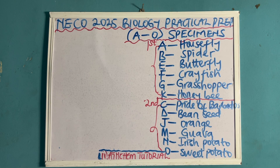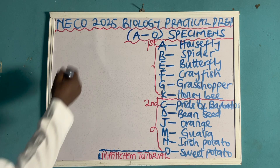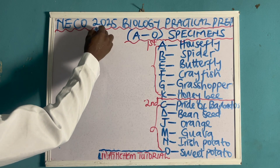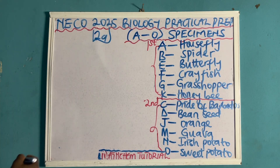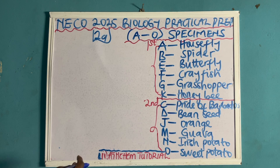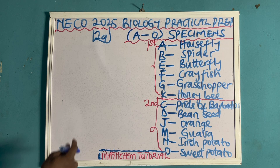The first question they can ask in this second category — let me name this 2A — is to identify the type of germination that occurs in specimen D. Specimen D is a bean seed. The type of germination that occurs in specimen D is epigeal germination.